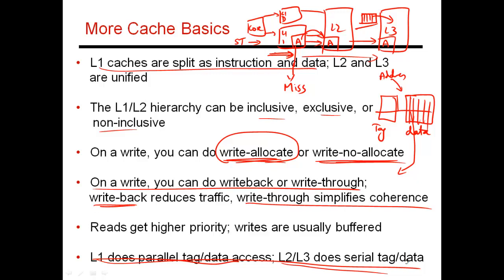Instead, what's done for L2 and L3 is you first look up the tags, determine which way — say, way 3 — has your data, and then look up only that way in the data array before sending it back to the CPU. This reduces energy consumption but increases access time, since you're sequentially looking up tags and then data. Once you get to L2 or L3, you're not as concerned about access time; you're more concerned about hit rate and reducing energy consumption because these structures are so large. That's why the serial tag-then-data policy is employed for L2, L3, and beyond.